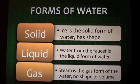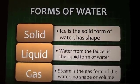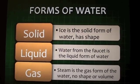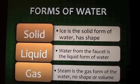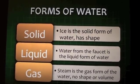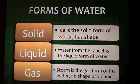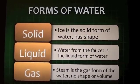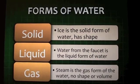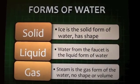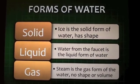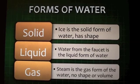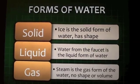A good example of the three stages of matter is water. Ice is the solid form of water, which has shape. Water from the faucet is the liquid form of water. Steam is the gas form of water — no shape or volume is present.